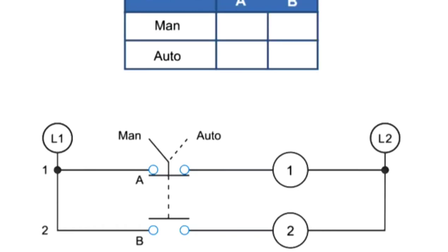Thus, if the selector switch is in the MAN position, A is X or closed, and B is O or open. When the switch position is set to AUTO, A is O or open, and B is X or closed.